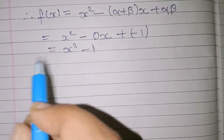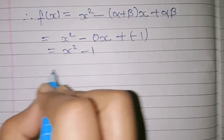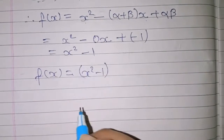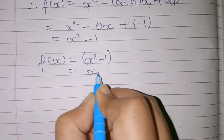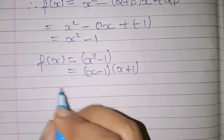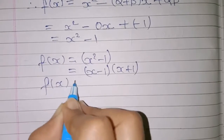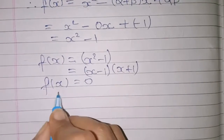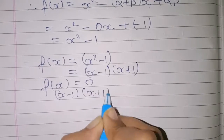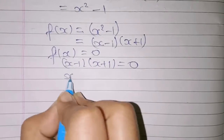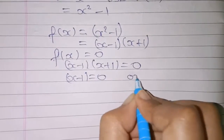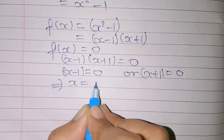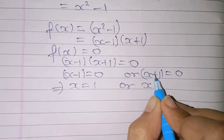तो quadratic polynomial हमें x squared minus one मिलेगा। अब zeros find करने के लिए इसको factorize करते हैं। f(x) = x squared minus one को factorize करेंगे तो x minus one और x plus one होगा। f(x) को zero के equal put करते हैं: x minus one equal to zero और x plus one equal to zero, यहाँ से x = plus one और x = minus one।